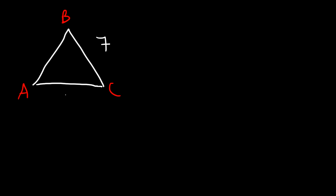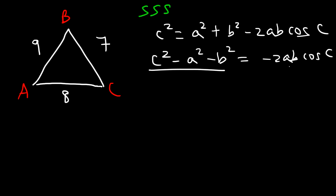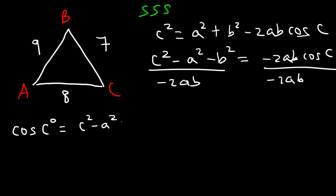Now let's say side A is 7, side B is 8, side C is 9. Use the law of cosines to solve the triangle. This time we have all three sides — a side, side, side triangle. Starting with C squared equals A squared plus B squared minus 2AB cosine of angle C, we can rearrange it: cosine of angle C equals C squared minus A squared minus B squared, divided by negative 2AB.